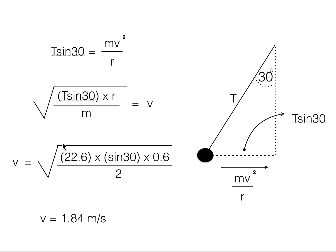Now we know the values of m, it's 2, r, 0.6 metres, and T, 22.6 newtons.